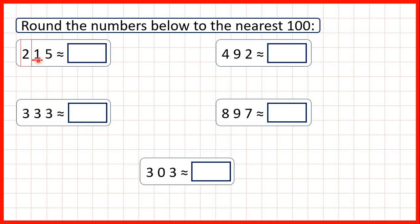If we have 5 or more, we round up, but if we have 4 or less, we round down. Because we have a 1, we're rounding down. That means the digit we've circled — our hundreds digit — is going to stay the same. So we get 200, because digits to the right of what we've circled turn into zeros.